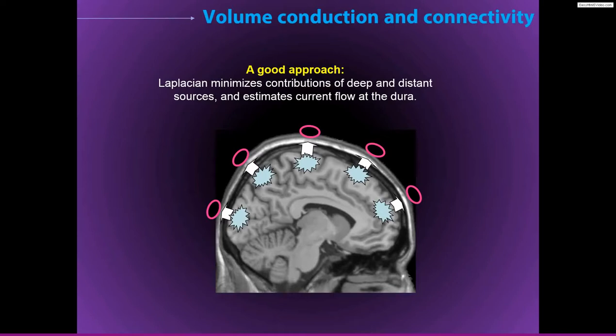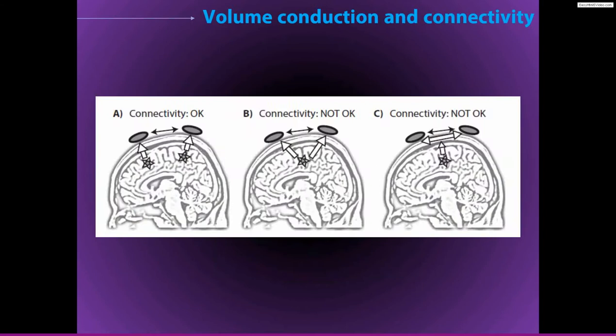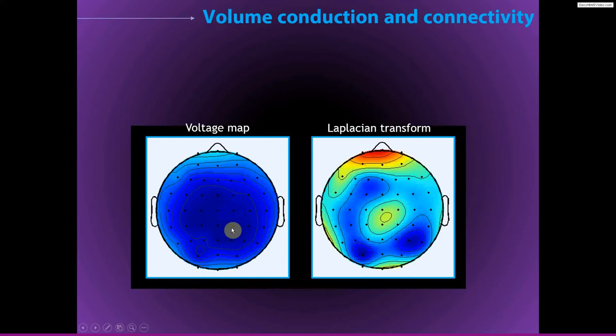This is a little bit idealized — it's not exactly true that after the Laplacian, each electrode perfectly measures the activity from a patch of cortex directly underlying that electrode. But this is a better approximation of what's going on compared to before applying the Laplacian. Here we see an example of a topographical map before and after applying the Laplacian. A lot of the low spatial frequencies have been removed from the data, giving much higher spatial precision, and after applying the Laplacian the artifactual connectivity between electrodes due to volume conduction is very strongly attenuated.